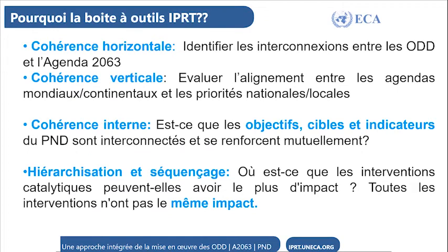Alors pourquoi la boîte à outils IPART ? L'IPART sert à évaluer la cohérence en identifiant les interconnexions entre les ODD et l'agenda 2063. Elle fait également une cohérence verticale en évaluant l'alignement entre les agendas continentaux et les priorités nationales et locales. Elle aide à établir une cohérence interne, à comprendre si les objectifs, cibles et indicateurs du PND sont interconnectés et se renforcent mutuellement, et à une hiérarchisation et séquençage pour identifier où les interventions catalytiques peuvent avoir le plus d'impact.